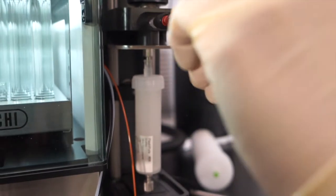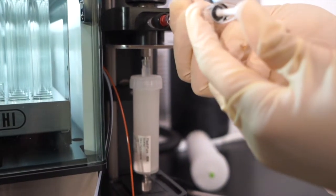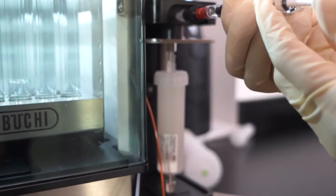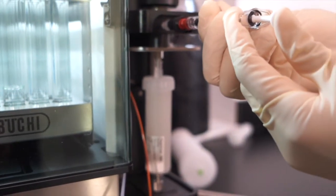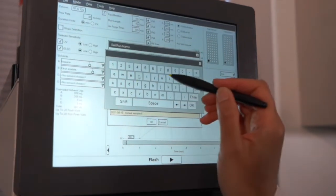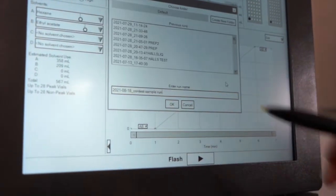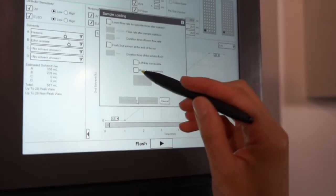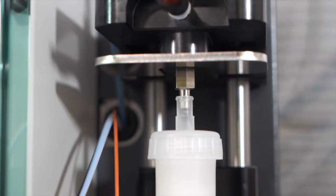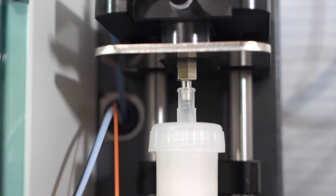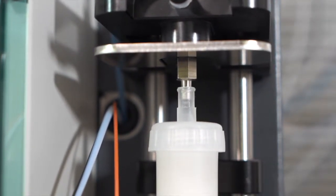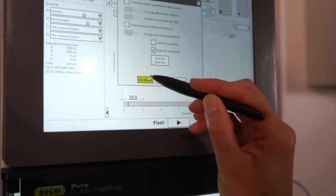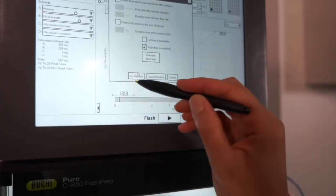There are two different ways to introduce sample to the system, liquid injection or solid loading. After entering the gradient and pressing play, the system will prompt you to name your sample and select the type of sample loading. Then the system prompts to prime lines. If the solvent lines have been primed recently, you can skip ahead to column equilibration. Now that the column is equilibrated, the system says it's time to load my sample and press play.